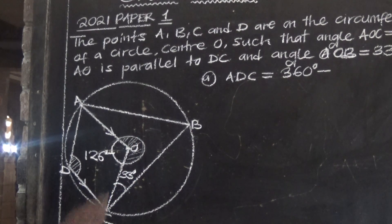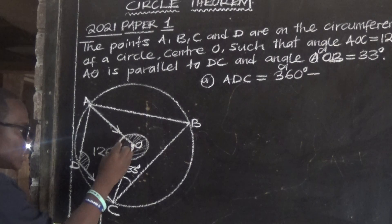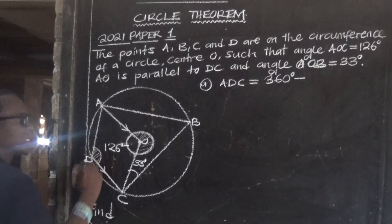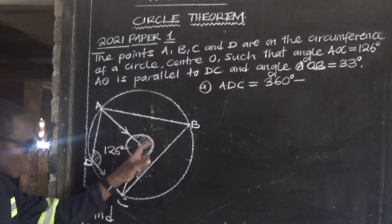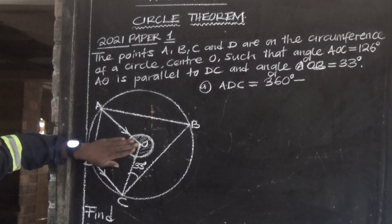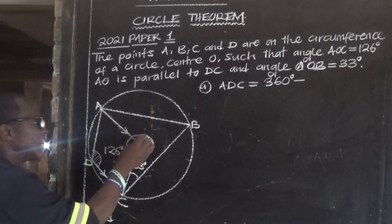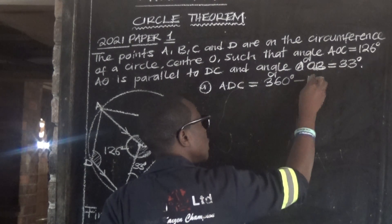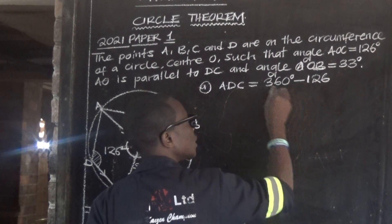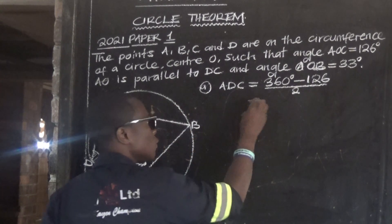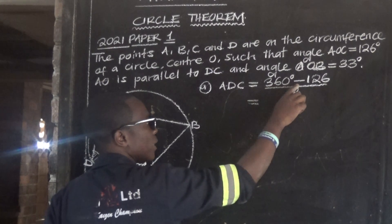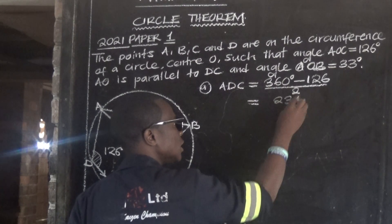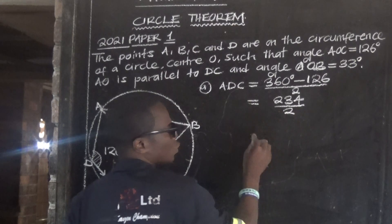So we say ADC is equal to — first find the reflex angle. We say 360 degrees minus 126 degrees. We find this reflex angle because the entire angle at the center is 360 degrees. We have 126, so to find the remaining reflex angle, we say 360 minus 126, then divide by 2.